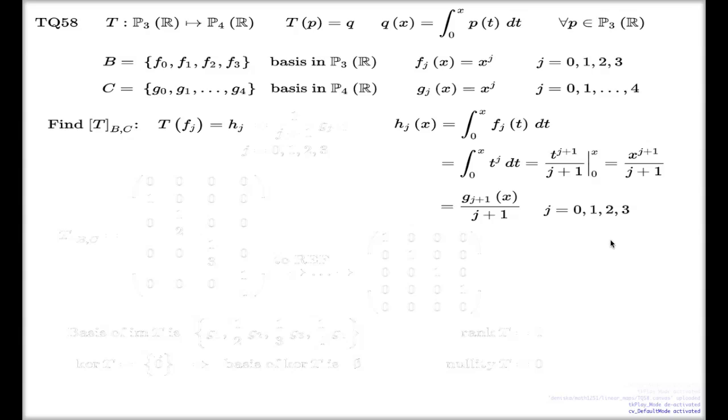That is true for every j from 0, 1, 2, and 3. So now I come back here. This name I introduced for the value of my T on fj is actually this polynomial. I'm dropping x from the presentation now because x is not supposed to be in this line, I mean x in brackets.